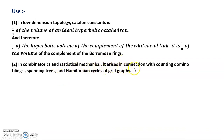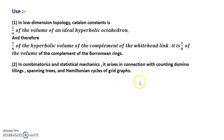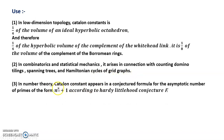In combinatorics and statistical mechanics, it arises in connection with counting domino tilings, spanning trees, and Hamiltonian cycles of grid graphs. In number theory, the Catalan constant appears in a conjectured formula for the asymptotic number of primes of the form n squared plus 1.